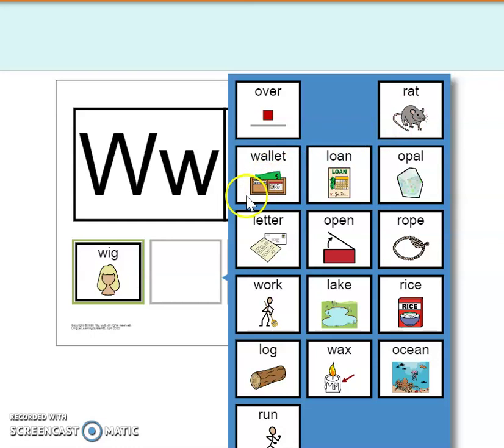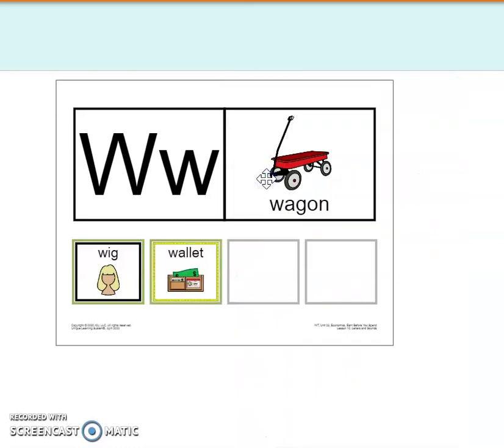Let's look at this picture. It's a wallet. W, W, wallet. Do you hear the W sound in wallet? Great job. So go ahead and you can cut and paste or write your word. Wallet. Yay, we got it right. It turned green. Great work so far.